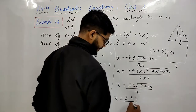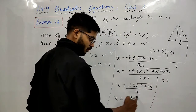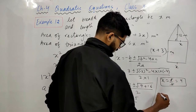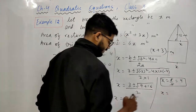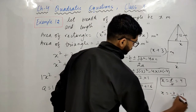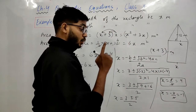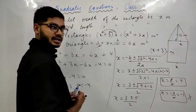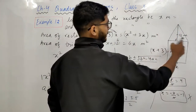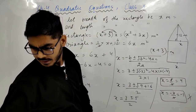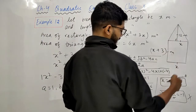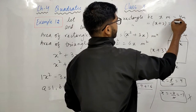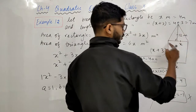दो values आएंगी: x = (3 + 5)/2 = 8/2 = 4, और x = (3 − 5)/2 = −2/2 = −1। अब x breadth है — length, breadth, या side कभी negative नहीं होती। इसलिए x = −1 reject, और x = 4 accept। Breadth = 4 meter, Length = x + 3 = 4 + 3 = 7 meter।